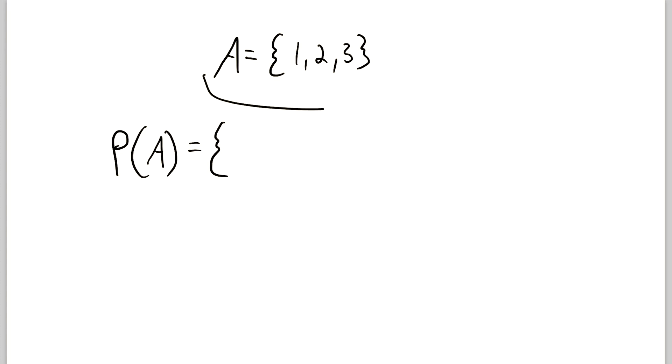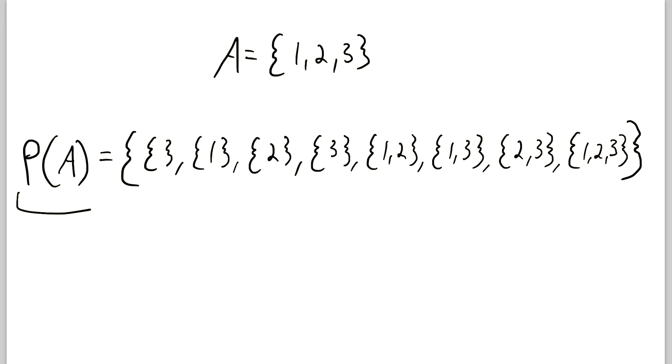So let's write that out. The power set of A contains every subset of A. Well, the first subset that comes to mind is the empty set. Then we have the set containing 1, then we have the set containing 2, and I'll write out the rest of these. So here it is. This is the power set of A. Every subset of A is contained in this set.